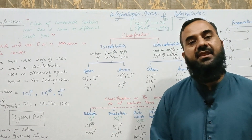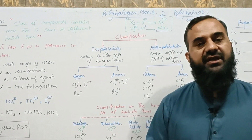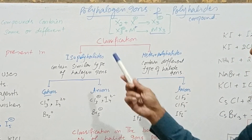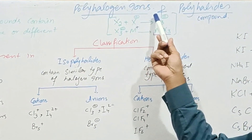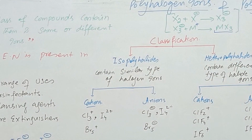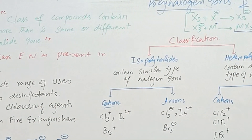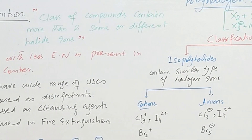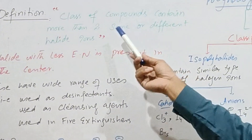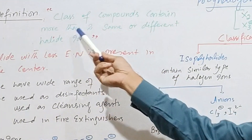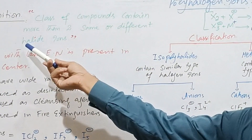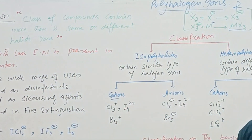Bismillahirrahmanirrahim. In organic chemistry, today I am going to discuss polyhalogen ions and polyhalide compounds. This is a class of compounds which contain more than two same or different types of halide ions.